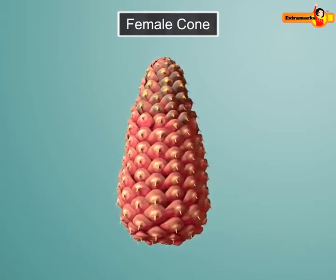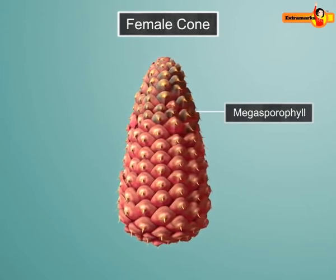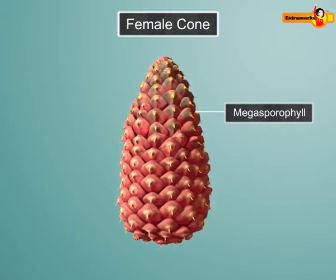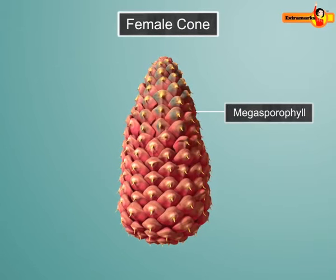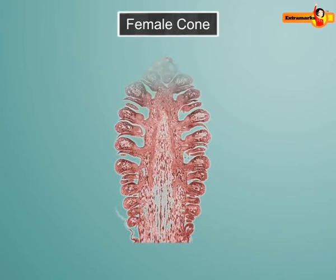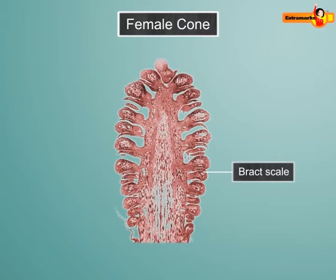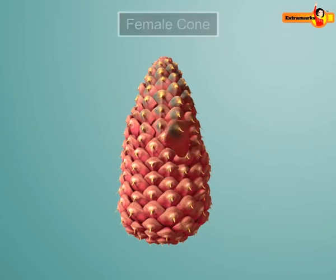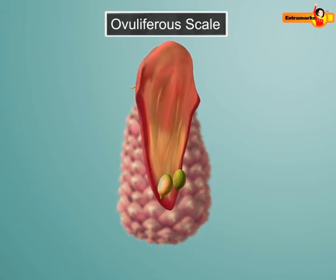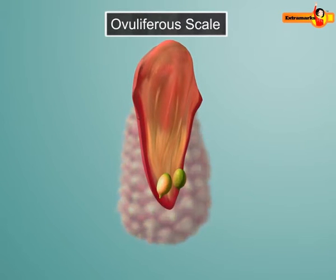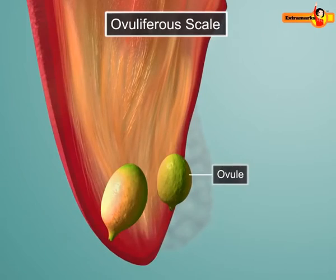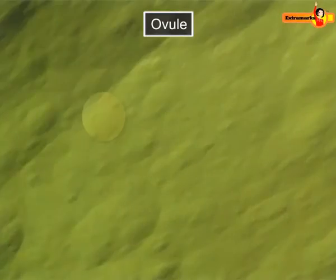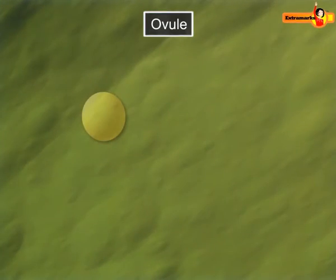The female cone is made up of many megasporophylls. Each megasporophyll is composed of two types of scales, namely bract and ovuliferous scales. The ovuliferous scale bears two naked and sessile ovules at its proximal part. The megaspore develops within the ovule, or megasporangium.